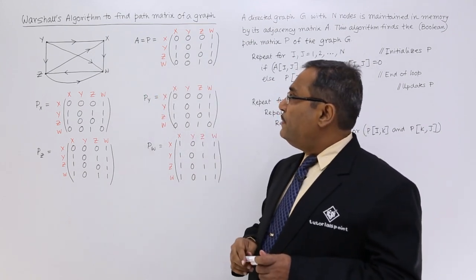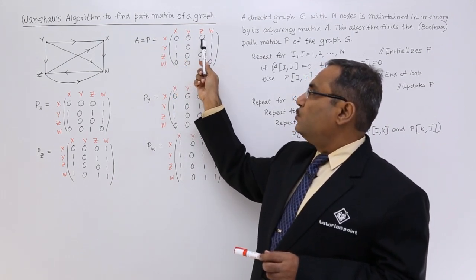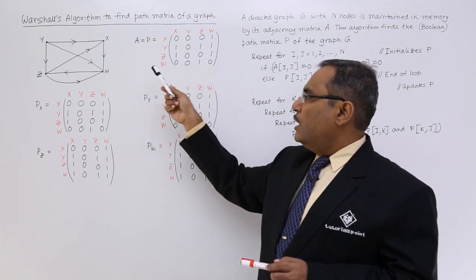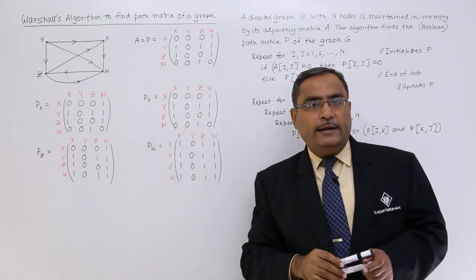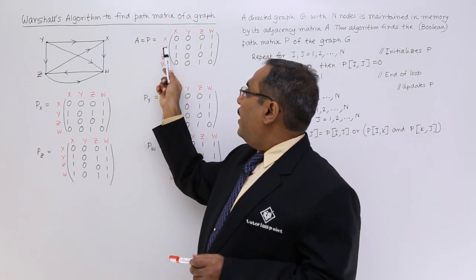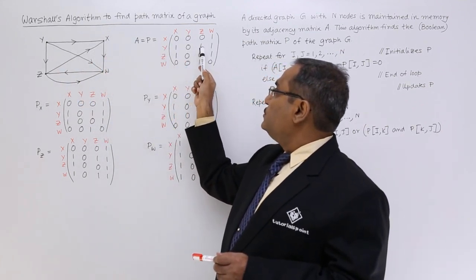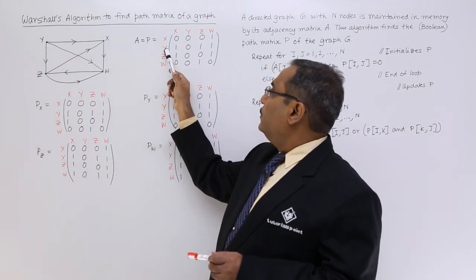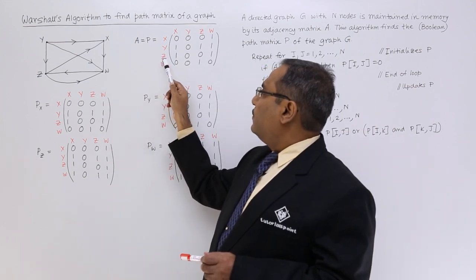Now this path matrix depicts that from x to y there is no path, from x to z there is no path, from z to y there is no path, but there is a path from z to w. If you trace this particular graph you will be getting this one. I am just showing one or two examples - y to x there is a path, y to z there is a path, there is no path from y to y, there is no self loop, there is no path from z to y.